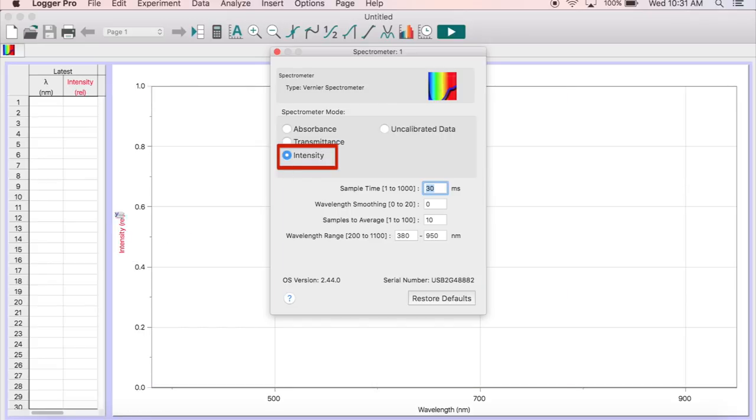Because the light intensity from the solution is too low, you will have to adjust the scan time. Select Sample Time from this menu and set it to 500 milliseconds. Leave the other settings alone. When finished, close this menu to update the settings.